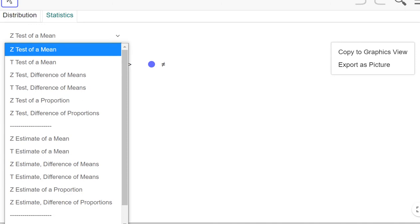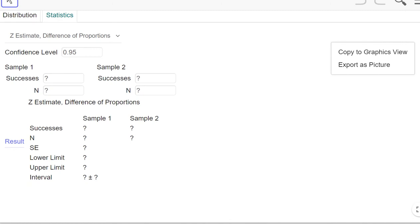I'm going to go to the statistics tab, and select the option for z estimate difference of proportions. We already have a 0.95 for confidence interval, so I don't need to change that. However, for the first sample, we have for successes, we have 6 out of 10. And for the second sample, we have 3 out of 10.